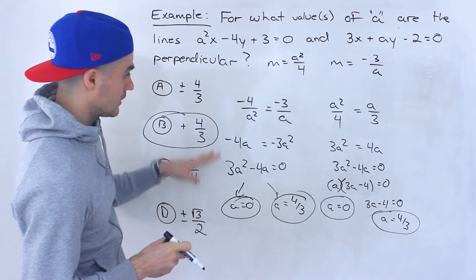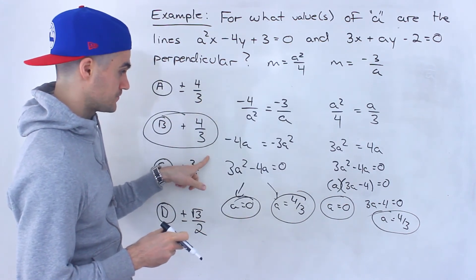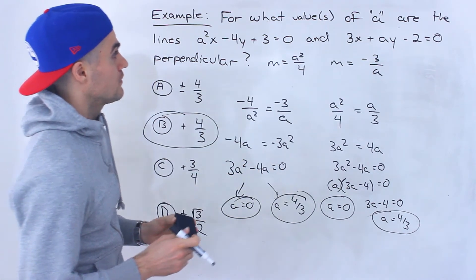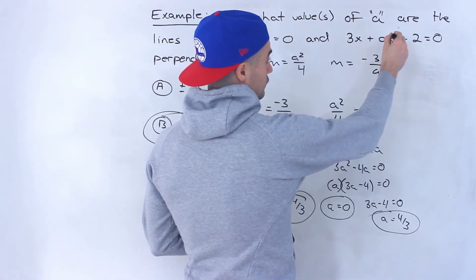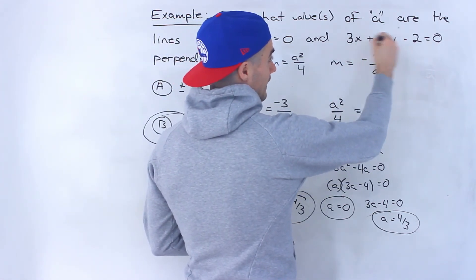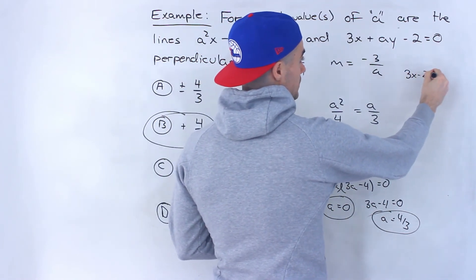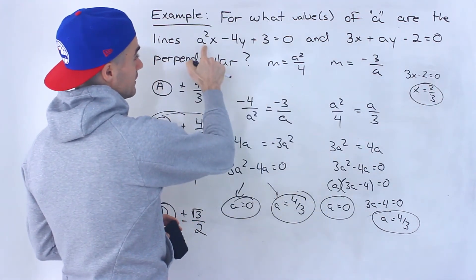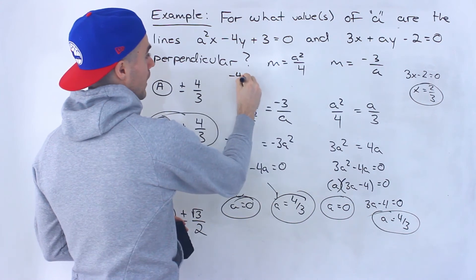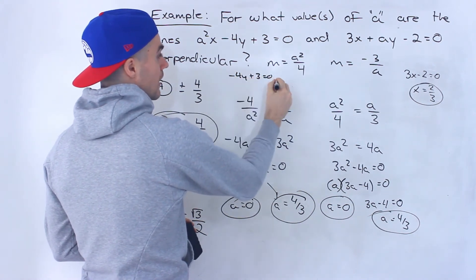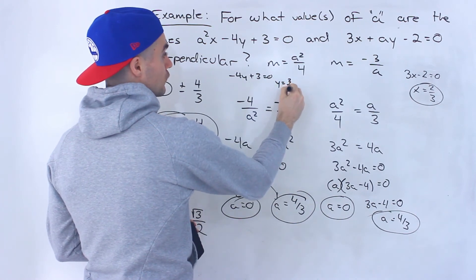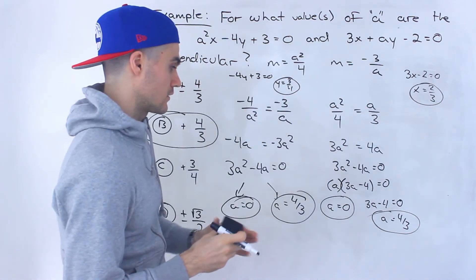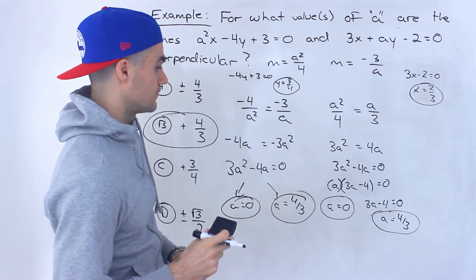A equals 0 is still a valid value. If we plug in 0 for A in the second line, we get 3X minus 2 equals 0, which is X equals 2 over 3 — a vertical line. Plugging 0 into the first line gives negative 4Y plus 3 equals 0, so Y equals 3 over 4 — a horizontal line. A horizontal and a vertical line are perpendicular, which is why A equals 0 works.